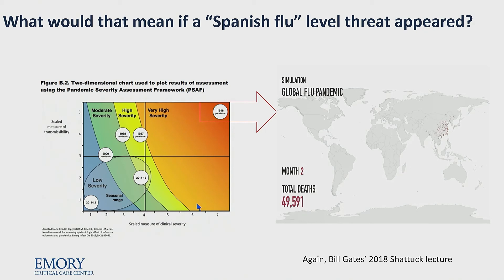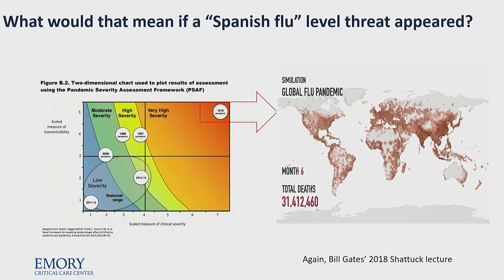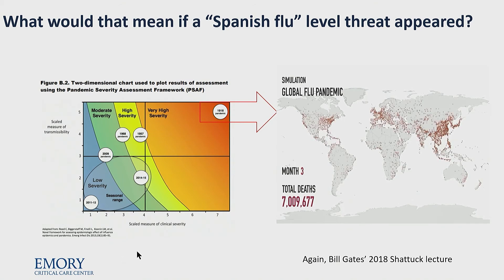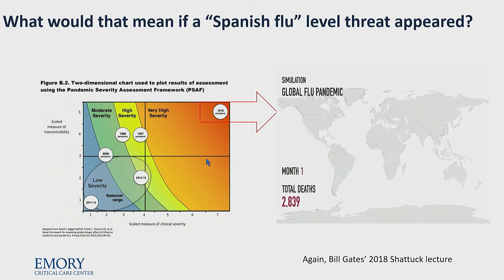Going back to Bill Gates' Shattuck Lecture, this is a simulation of what would happen if the Spanish flu were introduced to the world today. The estimates are that within about six months, about 32 million people would have died. That's based on a virus with significant severity and significant transmissibility, but these are the best available working numbers.